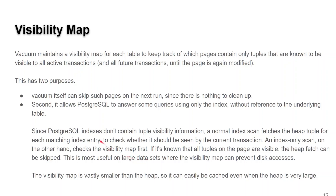Something else that's different about Postgres is indexes don't contain tuple visibility information, so the index itself can end up with values that aren't exactly current. A normal index scan fetches a bunch of records without checking to see if they're really the latest and greatest. An index-only scan, on the other hand, checks the visibility map first — so we know we have the latest and greatest. This speeds up things appreciably. By the way, the visibility map is much smaller than all the data, so it usually can be cached even when the size of the data is very, very large.